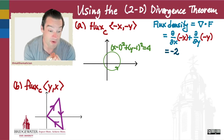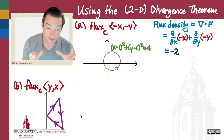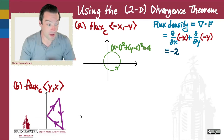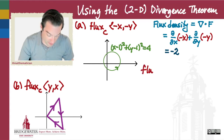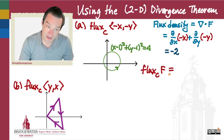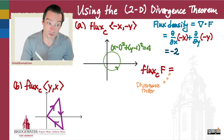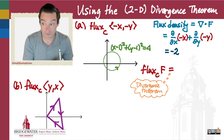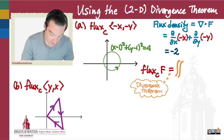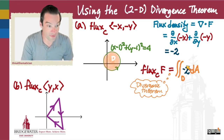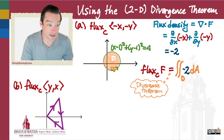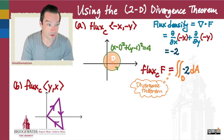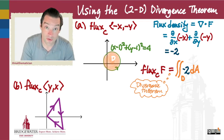This is an example of a vector field whose flux density everywhere in the xy-plane equals -2. So the flux, according to the divergence theorem, is the double integral of the flux density -2 over the disk bounded by the curve (x - 1)² + (y - 1)² = 4.